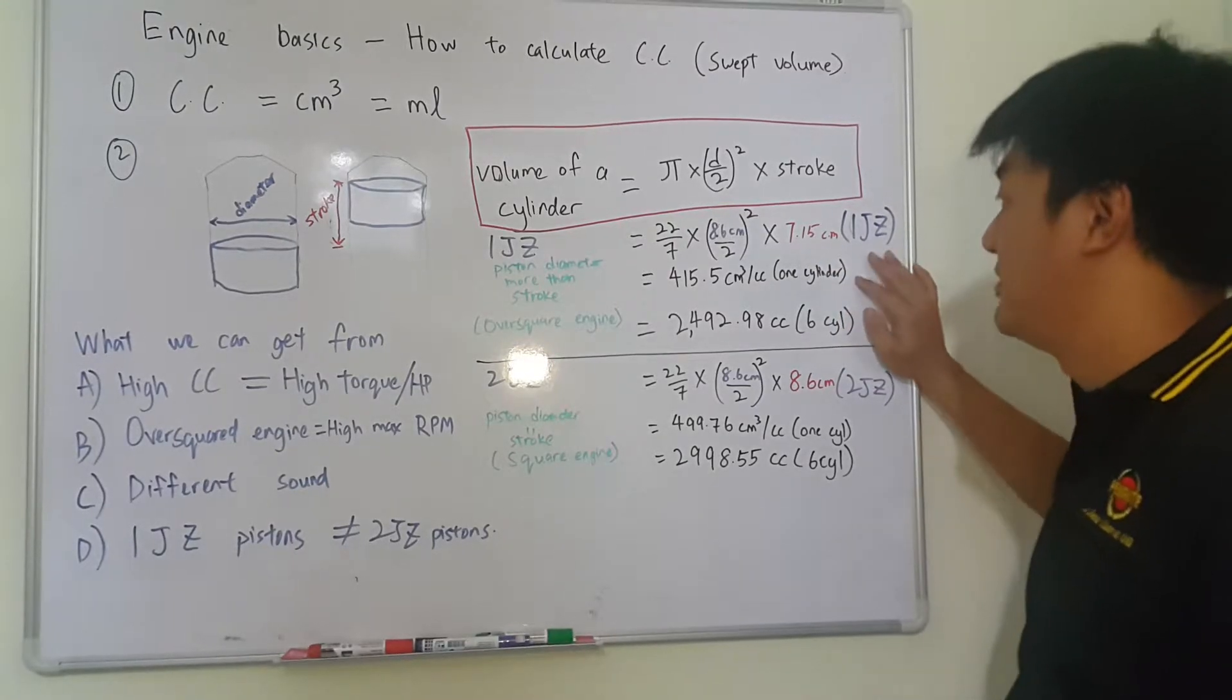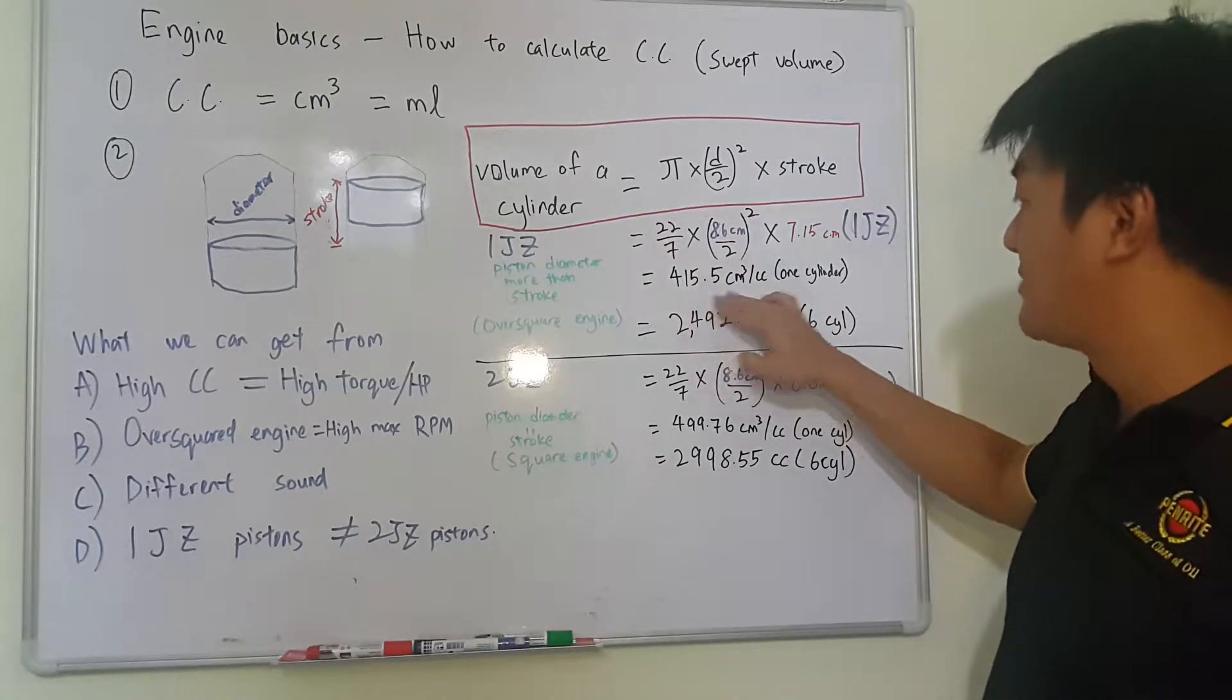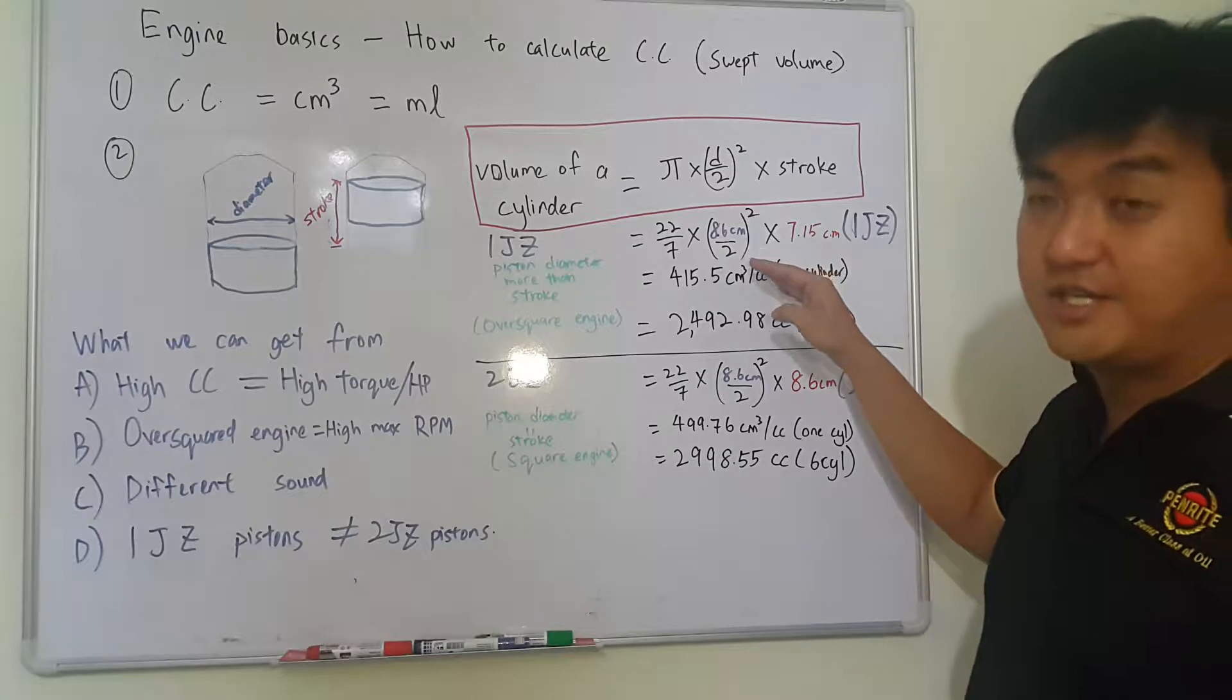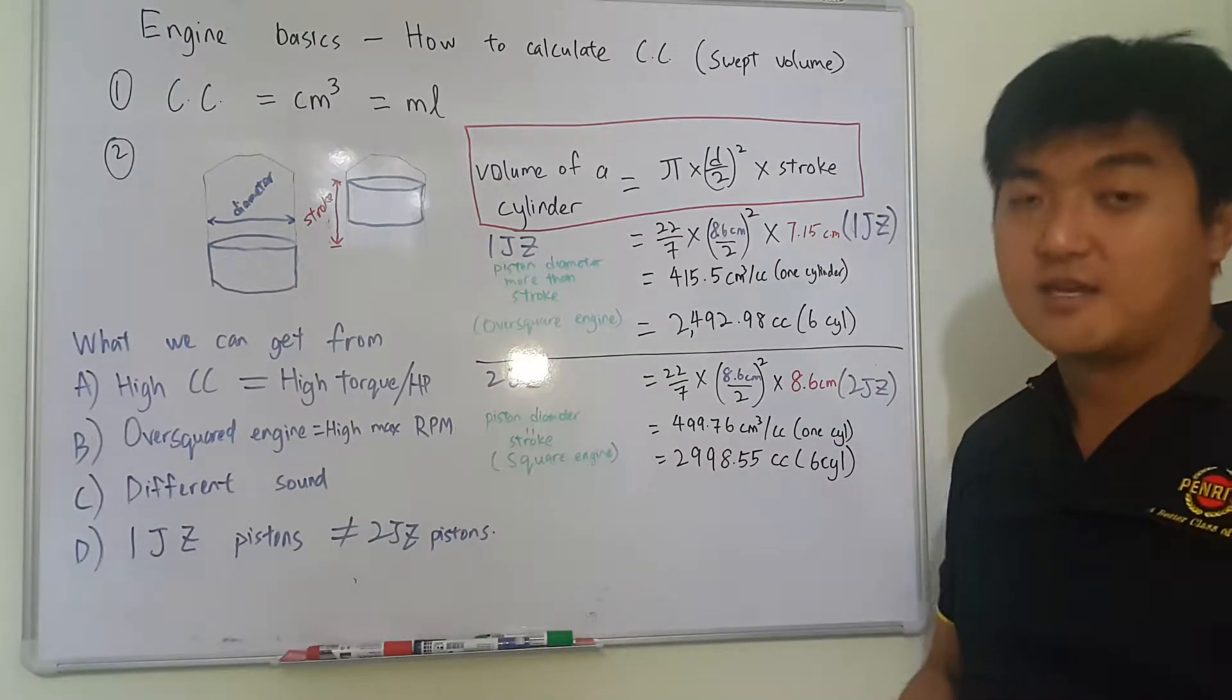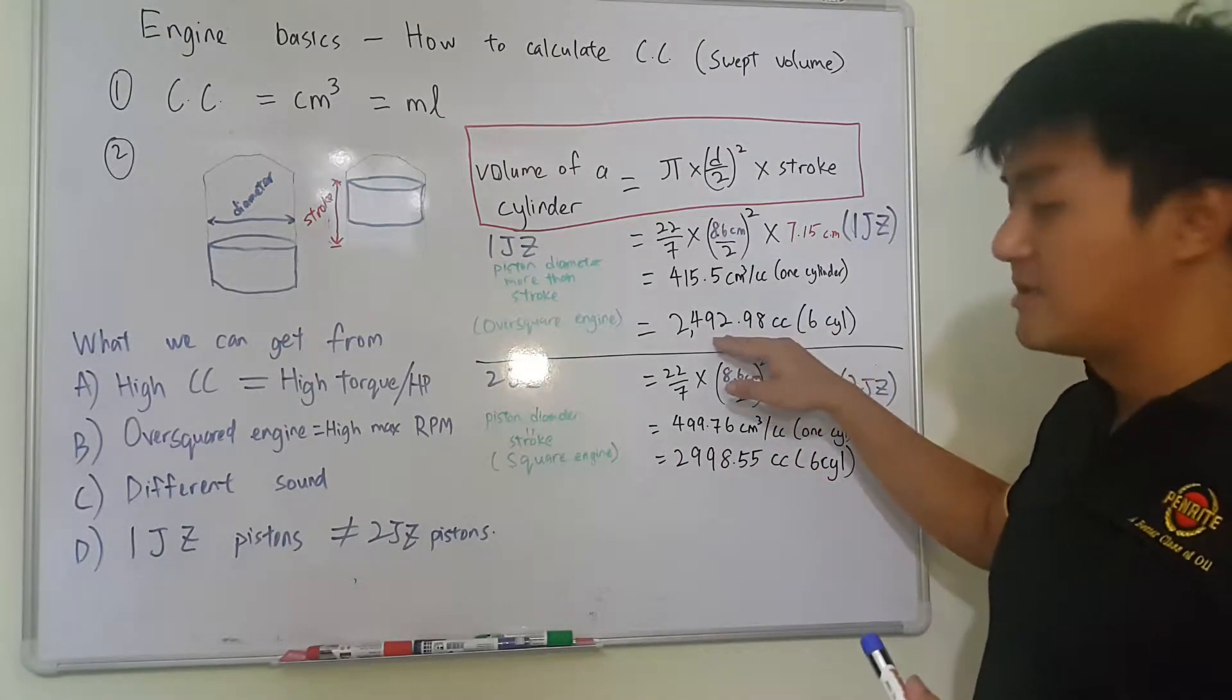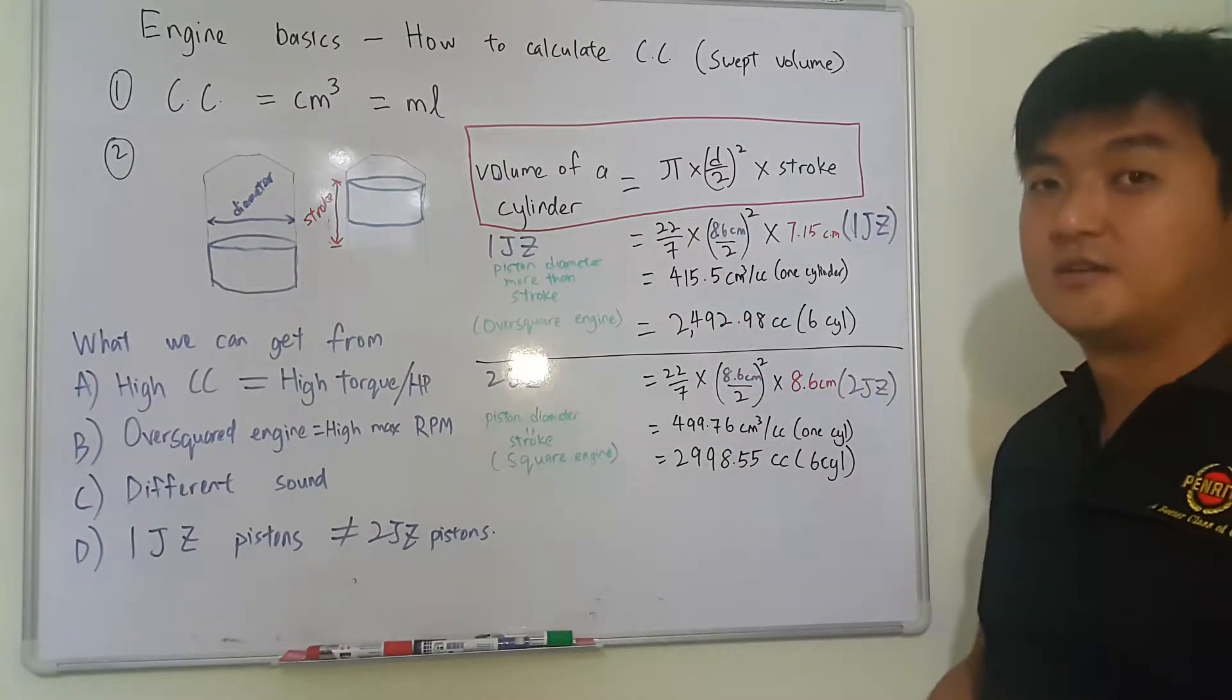This one is for 1JZ. So we can get, for 1 cylinder it is just 415.5 cm³. So there are 6 cylinders in JZ, so with times 6 we can get 2,492.98cc, which is the same as slightly lower than 2.5 liters.